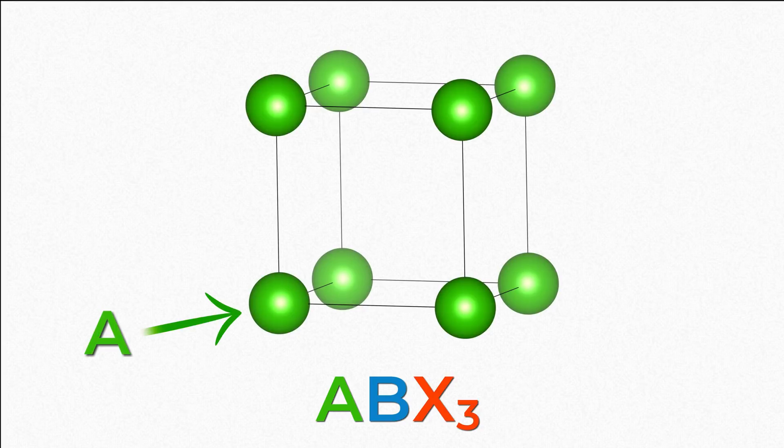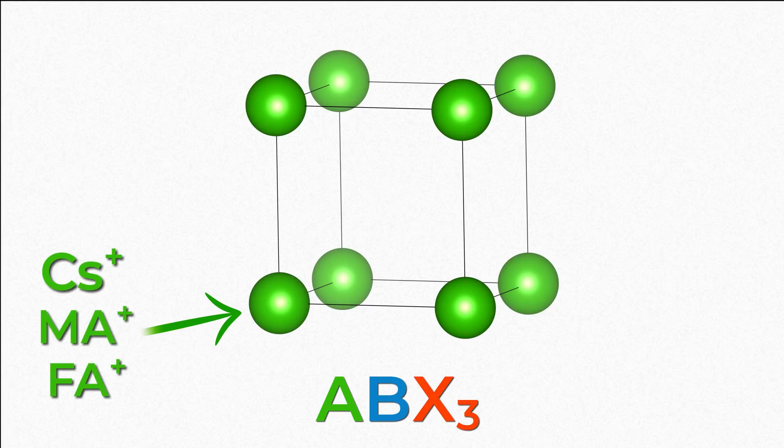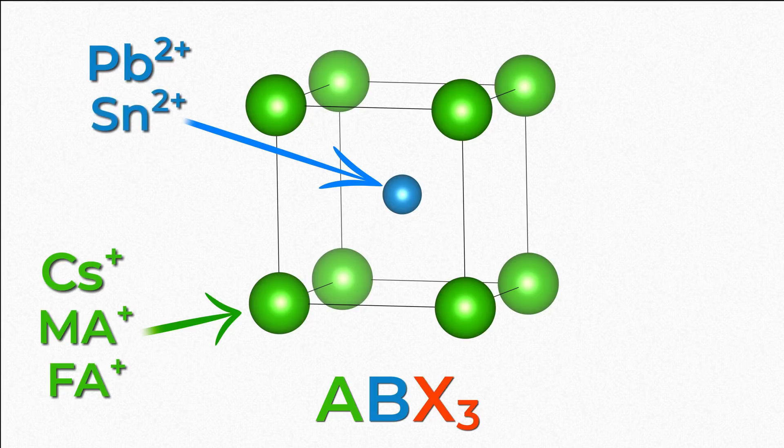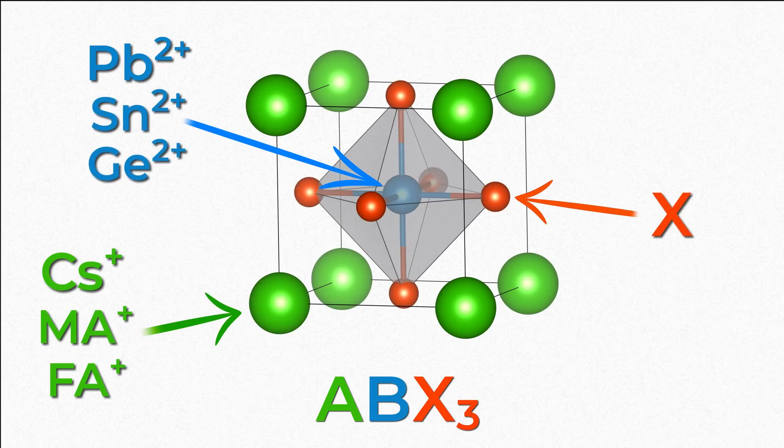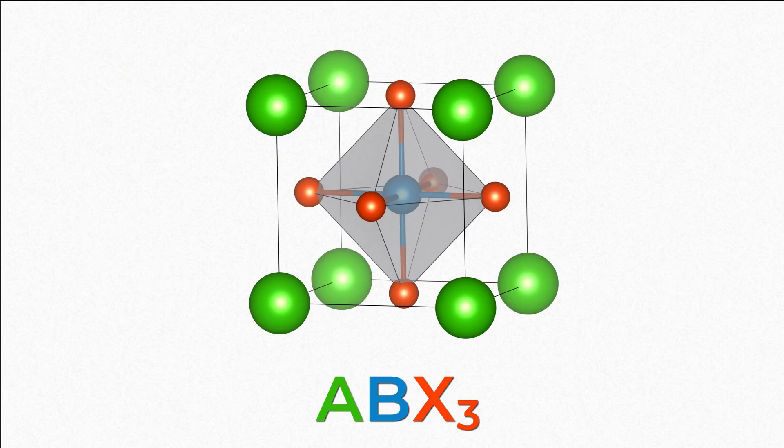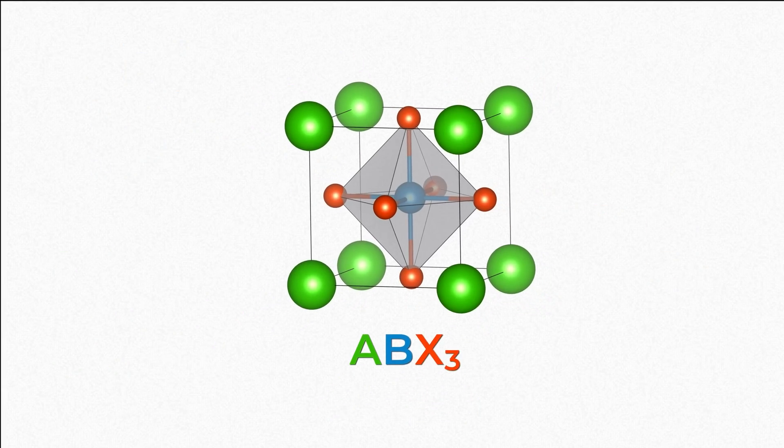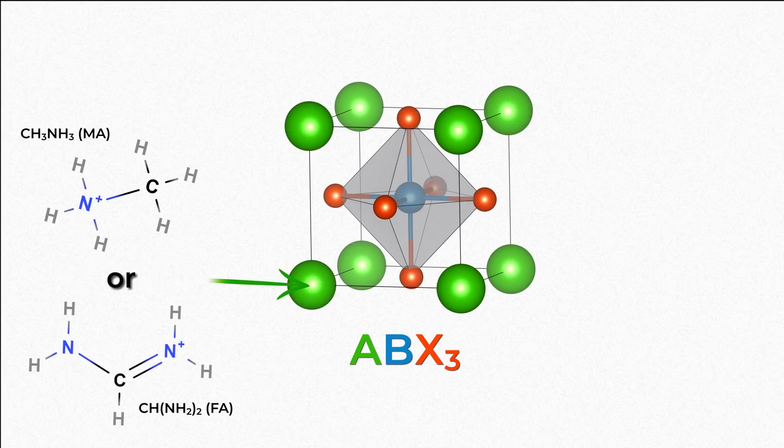A is any single positively charged inorganic atom or organic molecule, such as caesium, methyl ammonium, or formamidinium. B is a metal with a 2+ charge such as lead, tin, or germanium, and X is a halide ion, that is an atom such as iodine, bromine, or chlorine, with a single negative charge. Generally speaking, successful perovskite cells are a combination of an organic A site and inorganic B and X sites, combining the best of both worlds when it comes to their material properties.